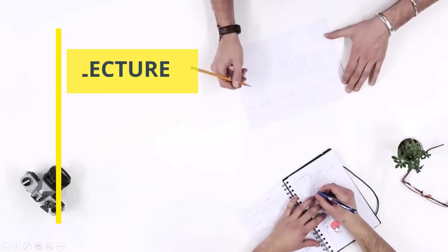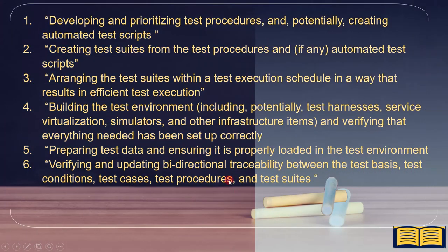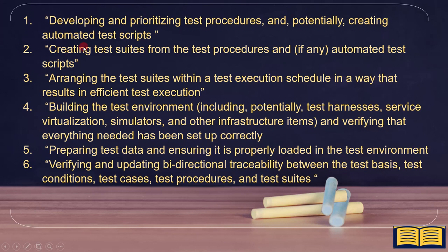To summarize, the six major activities of test implementation are: 1) Developing and prioritizing test procedures and potentially creating automated test scripts. 2) Creating test suites from the test procedures and automated test scripts. 3) Arranging the test suites within a test execution schedule for efficient test execution. 4) Building the test environment including test harnesses, service virtualization, simulators, and other infrastructure items, and verifying everything is set up correctly. 5) Preparing test data and ensuring it is properly loaded in the test environment. 6) Verifying and updating bidirectional traceability between the test basis, test conditions, test cases, test procedures, and test suites.